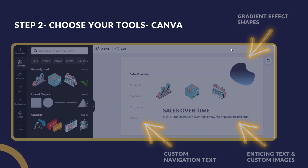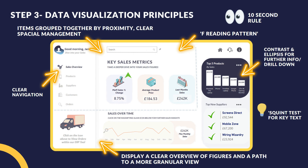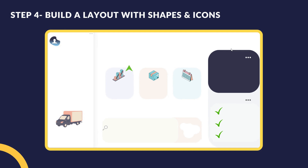Maybe you've wireframed, planned, or sketched — you've got a loose design together. You now need to figure out how to implement solid data visualisation principles. Items are grouped together by proximity. There's spatial management and no hard borders. We've implemented the F reading pattern, so people take in the most important information at the top left and centre of the screen. The 10-second rule: can people get key information within 10 seconds? Contrast. Squint test: can people read your titles with a squint? Are they large enough? Display a clear overview of figures and a path to a more granular view — even if this is minimalistic on the face of it, we give people a clear navigation to dig down into the detail, and by not overloading them straight away, you actually increase buy-in and entice them to scroll through your dashboard.